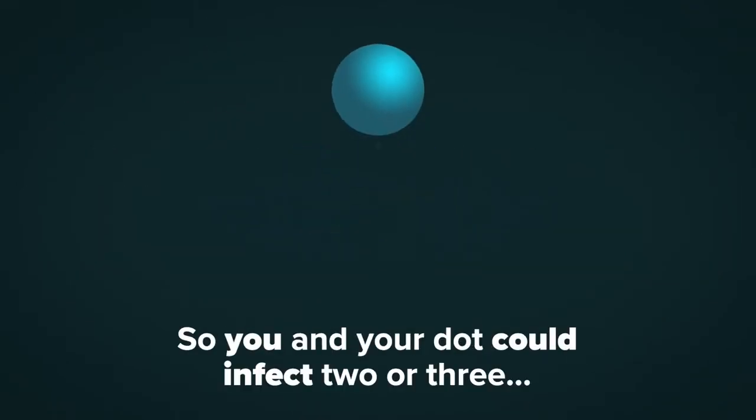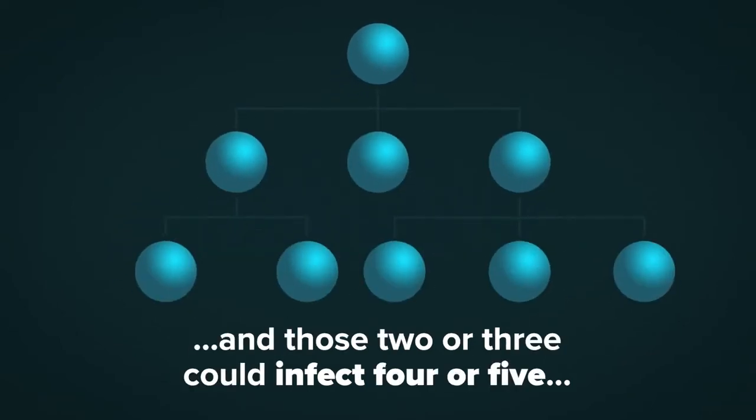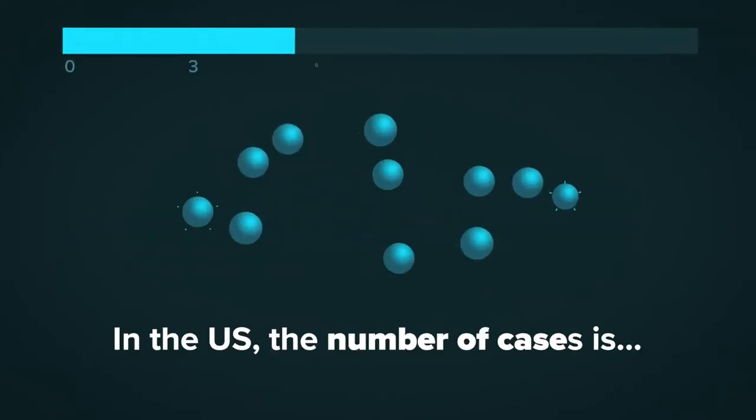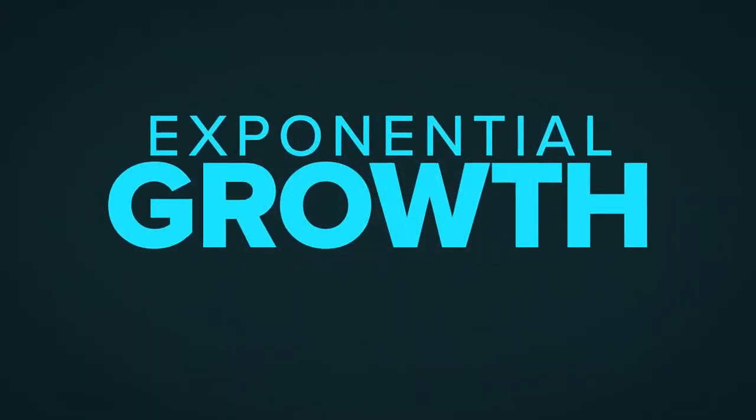So you and your dot could infect 2 or 3, and those 2 or 3 could infect 4 or 5, and so on and so on. In the U.S., the number of cases is doubling every 3 days. A true case of exponential growth.